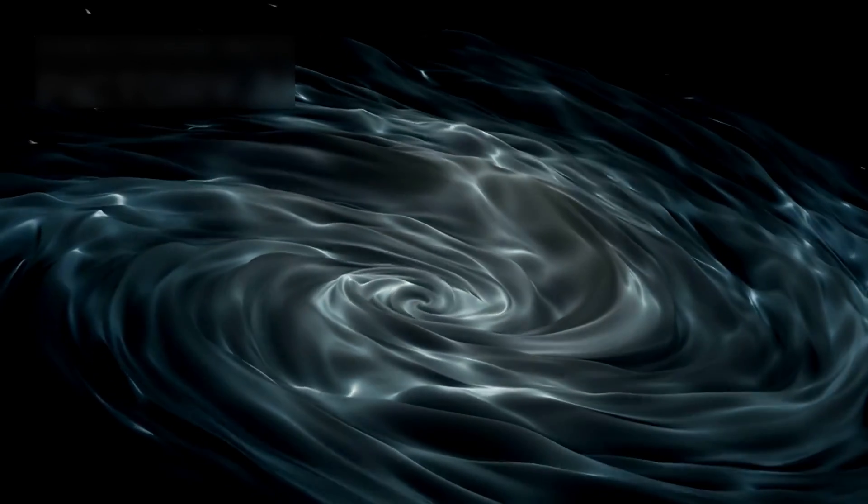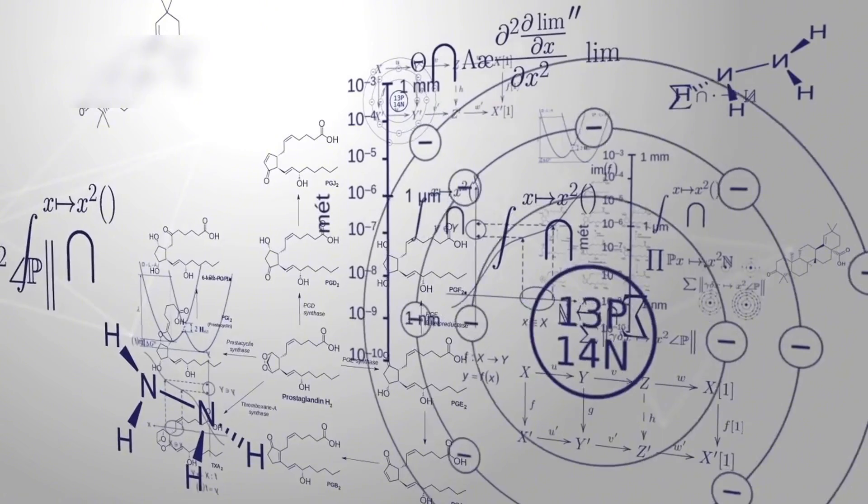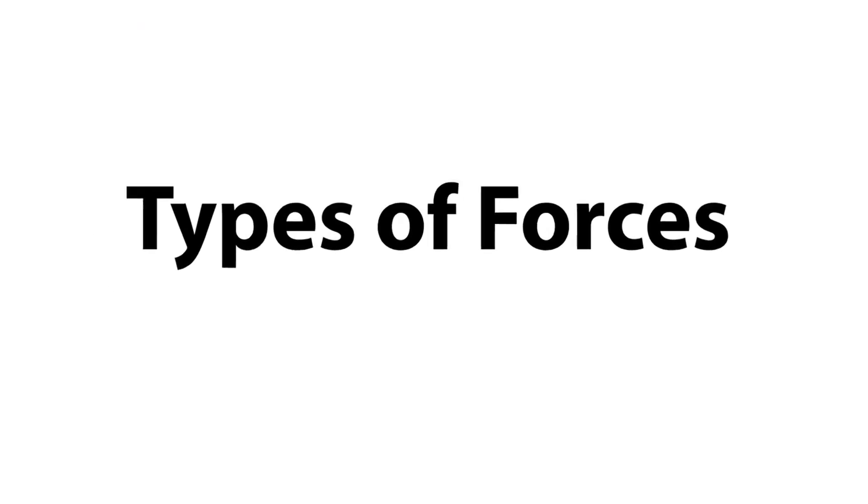His theory says we've misunderstood space and time. He believes light doesn't just stretch, it conceals information. What we've seen as dark matter may be a false interpretation. And dark energy, possibly just a mathematical patch. His model removes the need for those invisible forces.